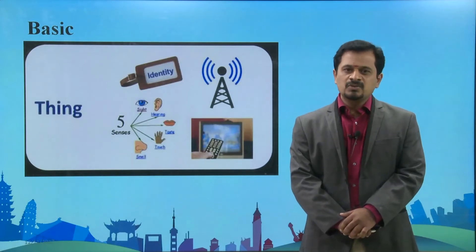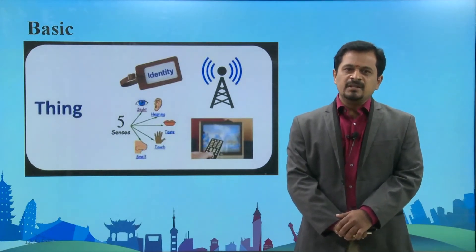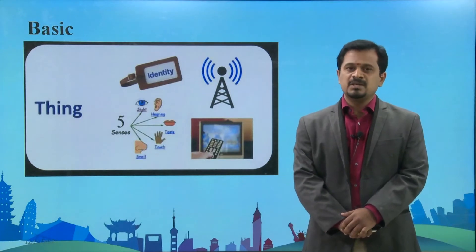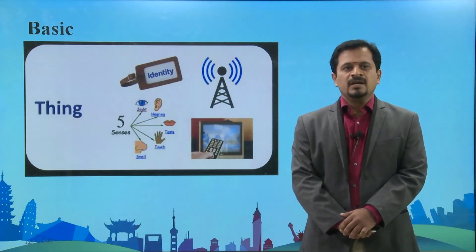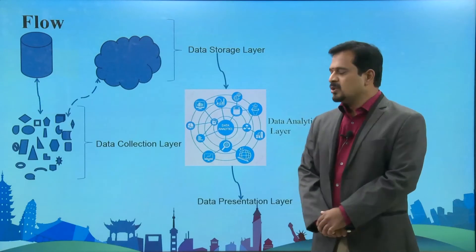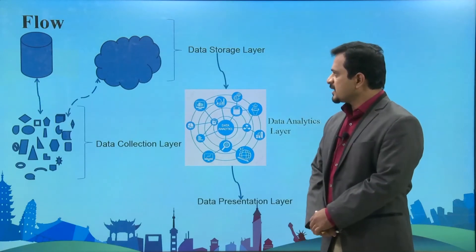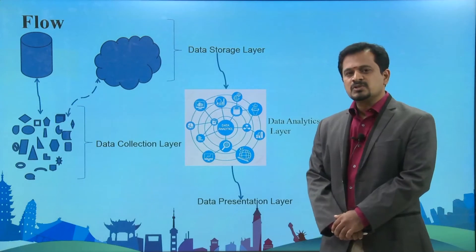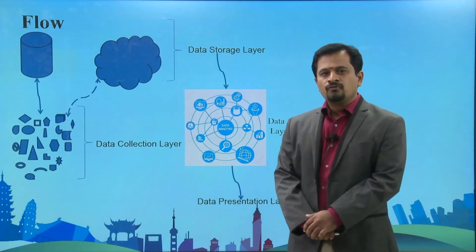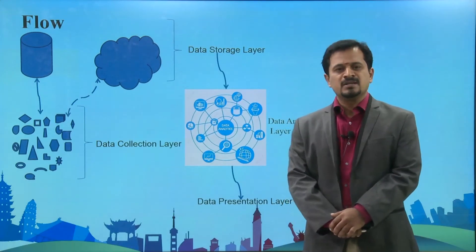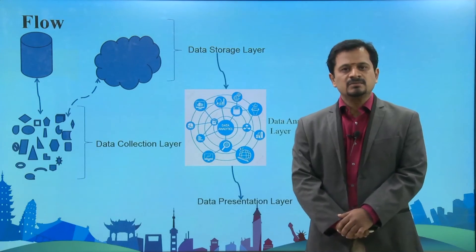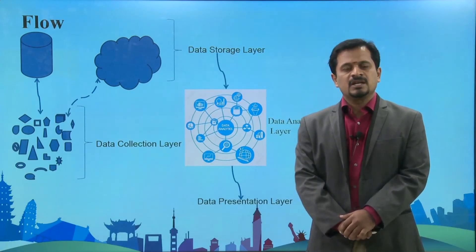If you look at this diagram, totally this Internet of Things consists of four layers: a sensing layer, communication layer, data collection layer, data storage layer, and then data presentation.